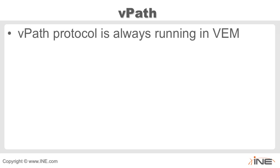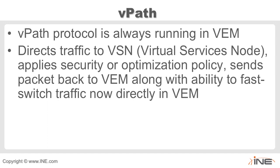The VPath protocol is always running in the virtual Ethernet module and directs traffic. In Cisco documentation, you'll see it referred to as either a VSN — virtual service node — or a VSB — virtual service blade. VPath directs traffic to those blades, such as the VSG — virtual security gateway — or even the ASA 1000V. It applies security or optimization policies once traffic reaches that services node, and then traffic is sent back to the virtual Ethernet module with the ability to fast-switch the traffic directly in the VEM.